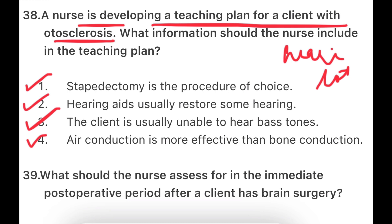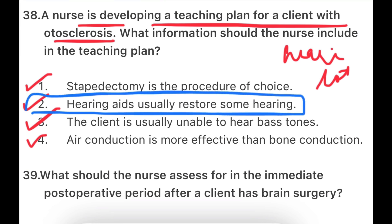In otosclerosis, there is significant hearing loss and the patient may not benefit from all treatments. The three small bones connected with the eardrum — which amplify sound waves — are unable to vibrate in this condition, so they do not amplify sound, causing hearing loss. The nurse should give the patient information that they can use hearing aids to restore some hearing. So the teaching plan should include that hearing aids usually restore some hearing.